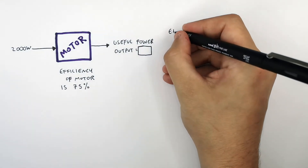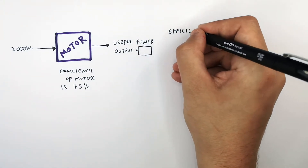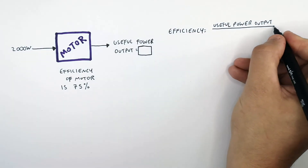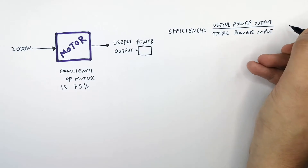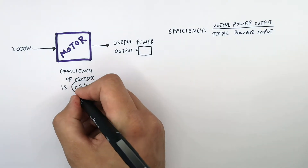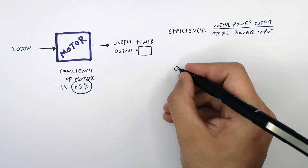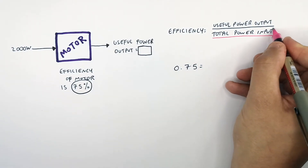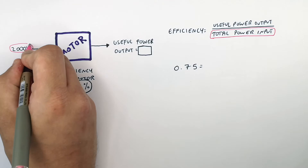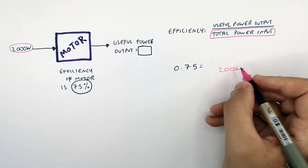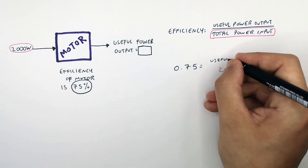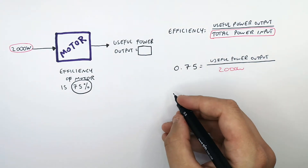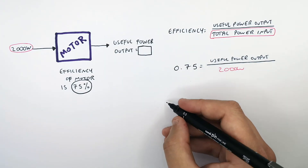To calculate the useful power output, recall the equation: efficiency equals useful power output divided by the total power input. The efficiency here is 75% — convert that to 0.75. We have the total power input, which is 2000 watts. So you've got 0.75 equals the useful power output divided by 2000 watts.